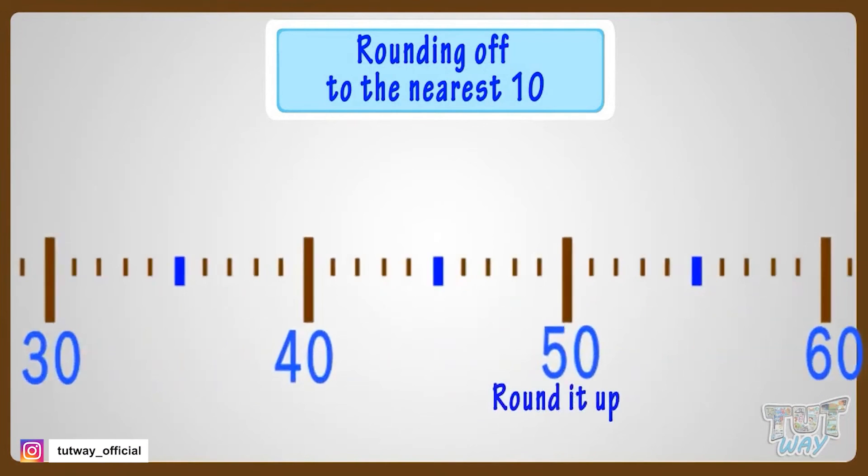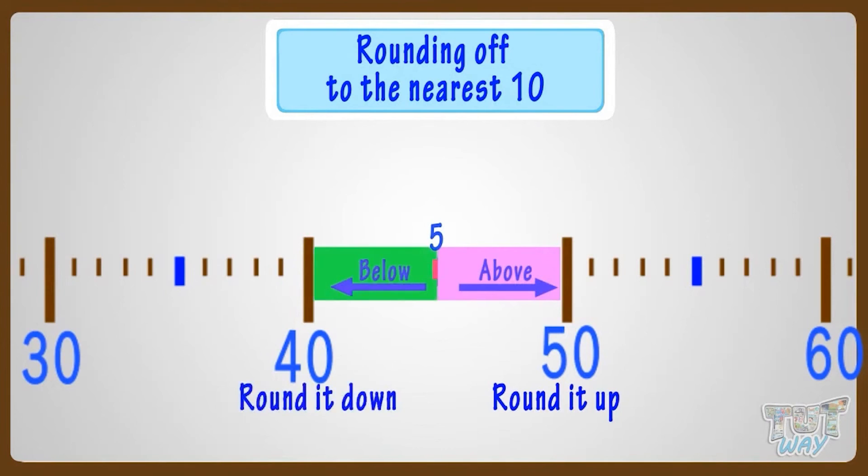we round the number up if it's on the 5 mark or above the 5 mark. And we round the number down if it's below the 5 mark. Good.